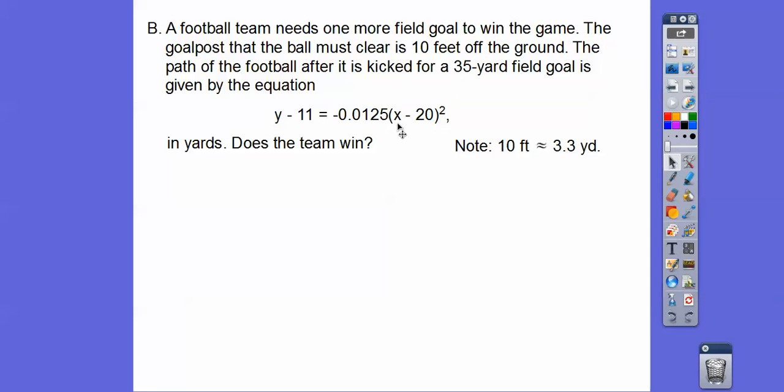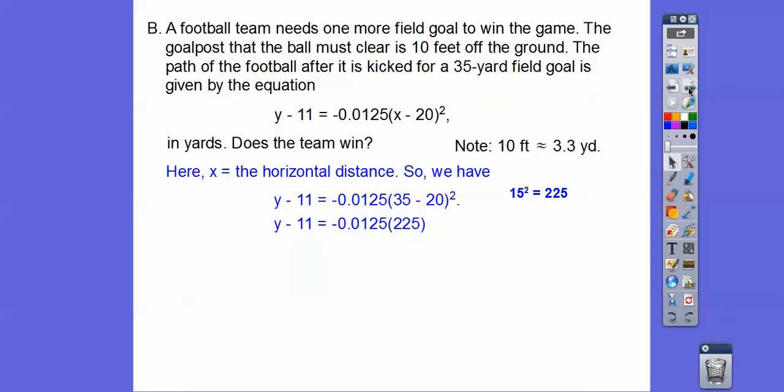All right, so 35 yards is going to be plugged in right there for X because that's an X movement. So here we go. Let's go ahead and plug that in. So X is your horizontal distance, so when we plug in 35 for X, 35 minus 20 is 15, and 15 squared is 225. So when we crank that out, multiply negative 0.125 times 225, we get that, and then we add 11, and we get that.